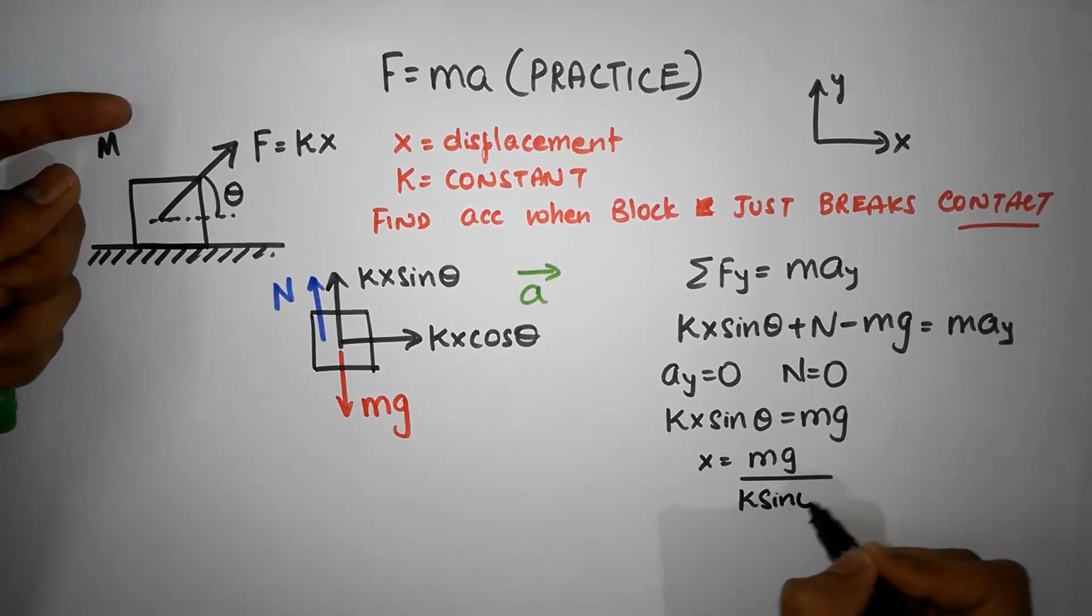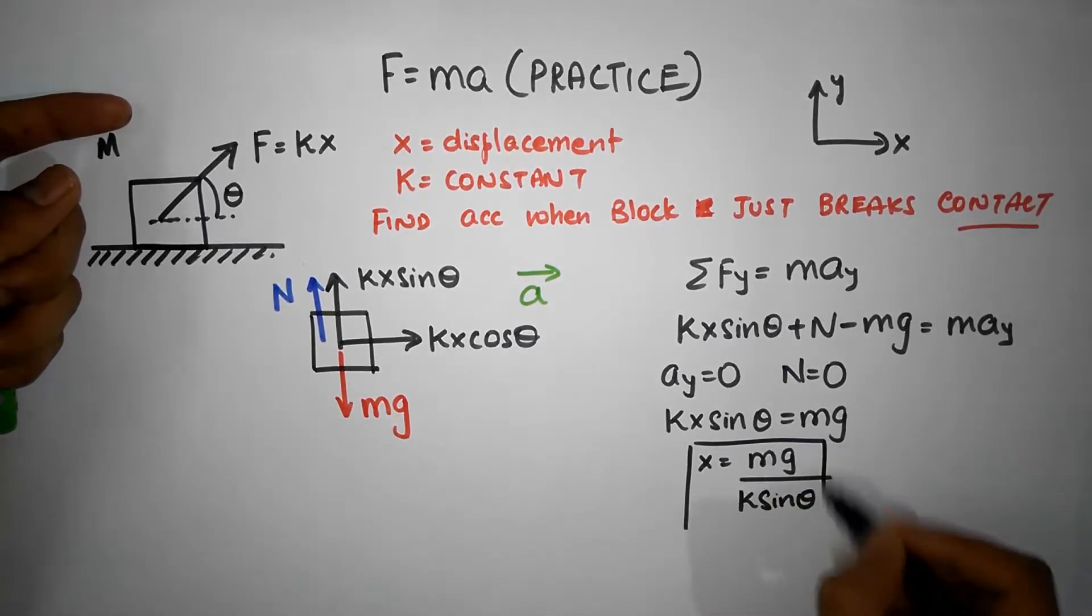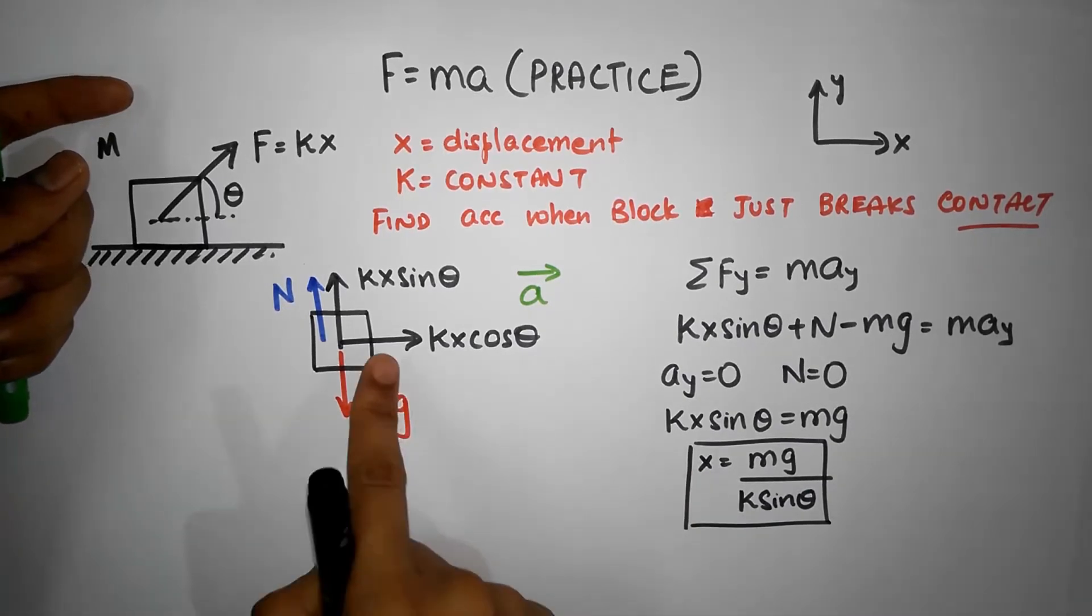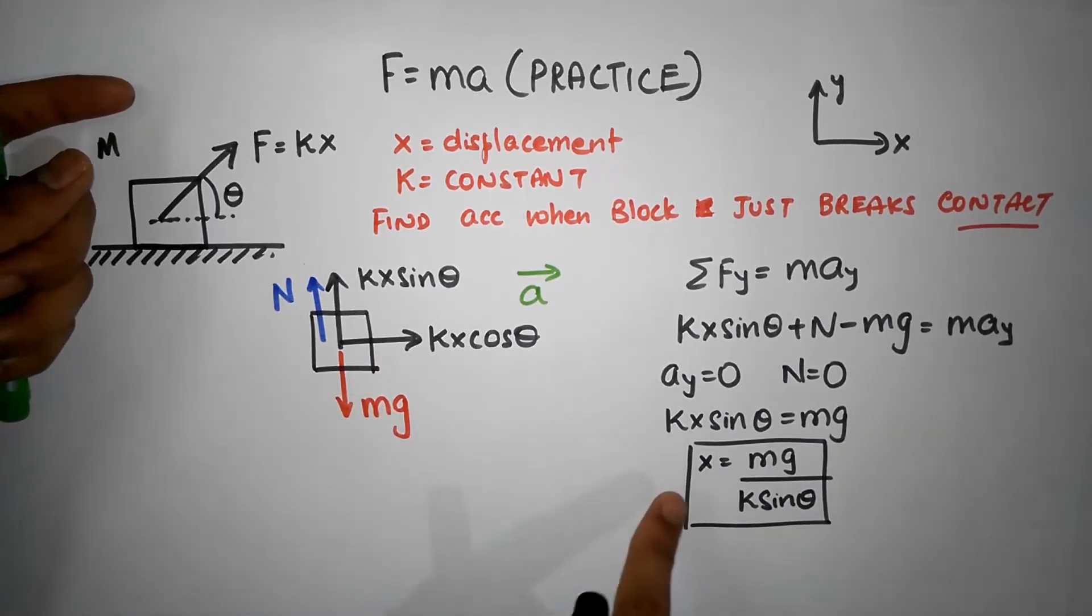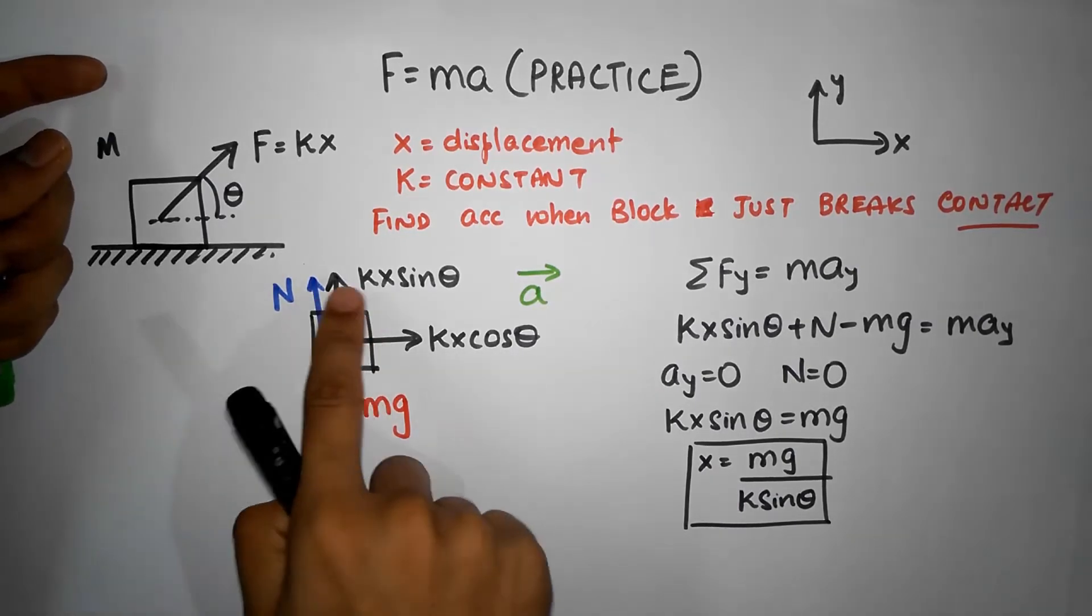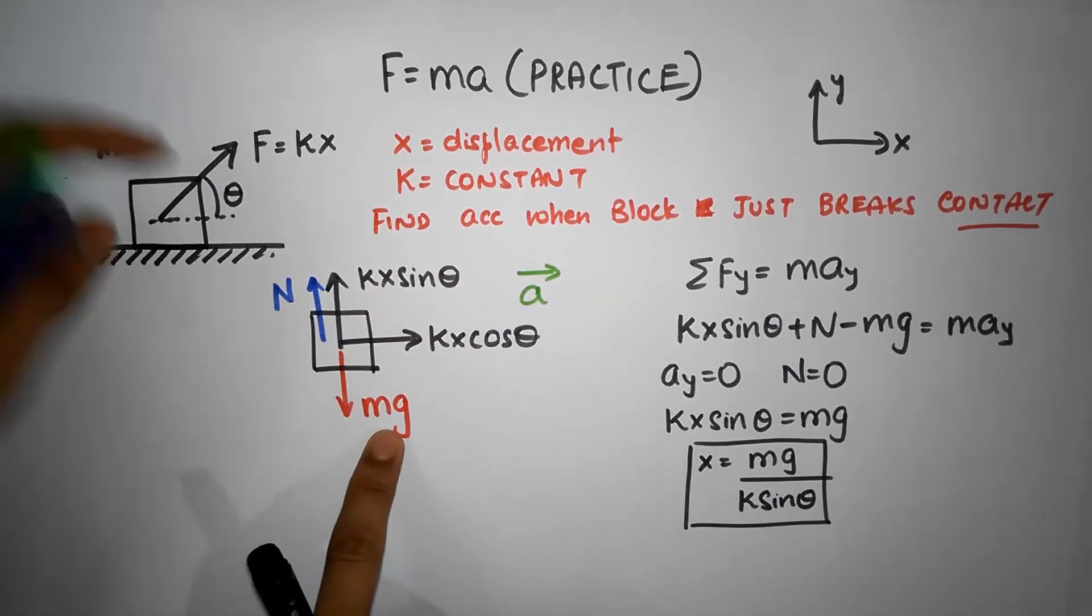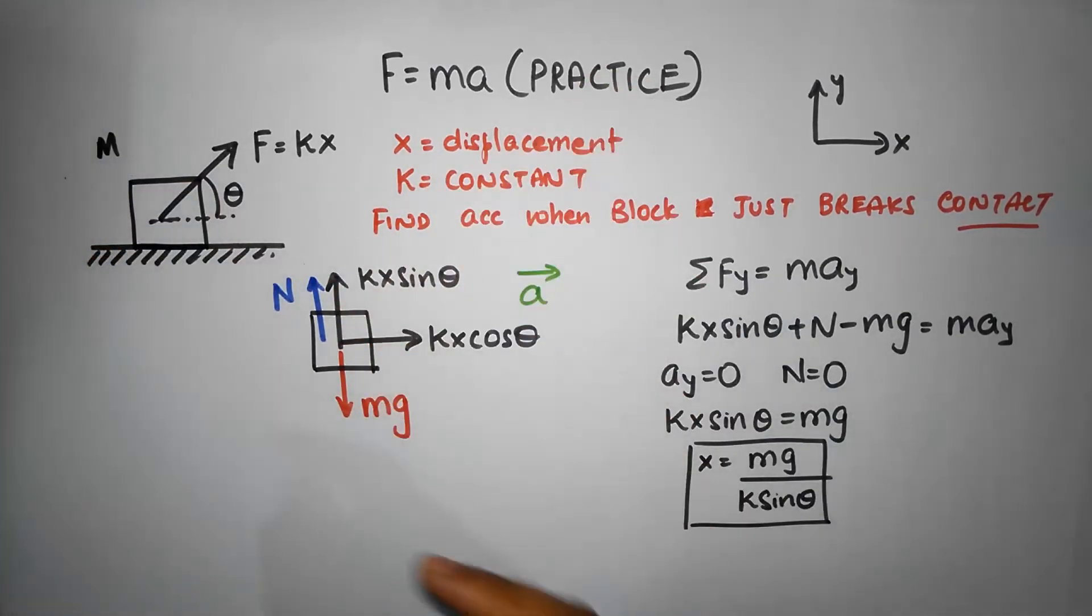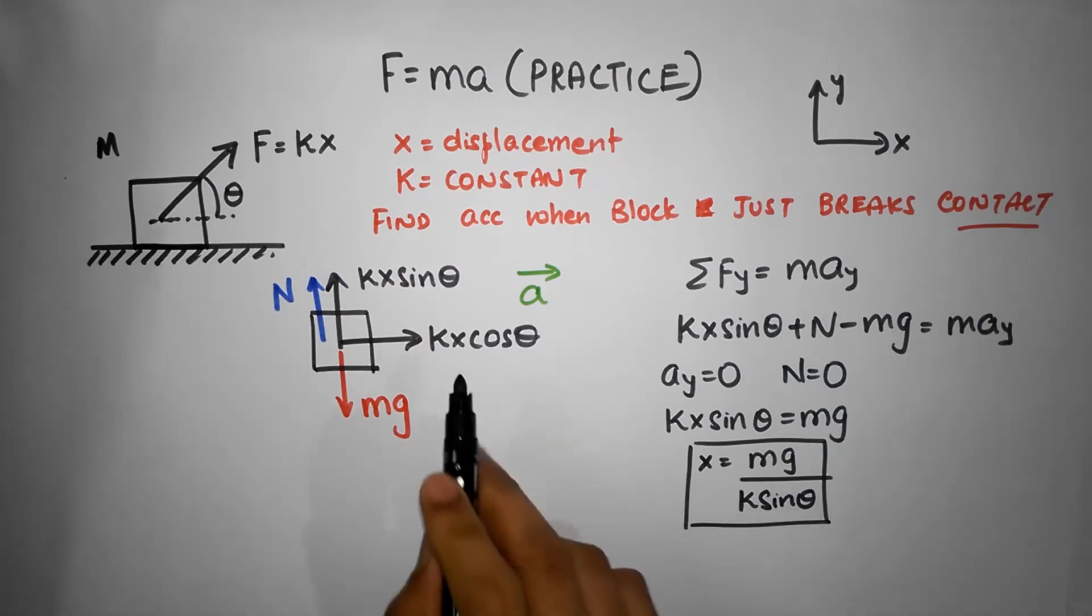So that's the displacement at which, or the position at which, when kx sine theta becomes equal to mg, normal force goes to zero. And if you wait for a nanosecond later, it's going to take off. Using this, I can figure out what the force value is in the horizontal.